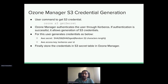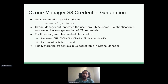When the user wants to get an access key and secret to talk to Ozone S3 APIs, they need to issue a command called 'ozone s3 getsecret.' When this command is run, the client is authenticated by Kerberos. If authentication is successful, it allows generation of S3 credentials. The access key is nothing but the Kerberos user ID, and the secret is a SHA-256 digest of 32 random characters. These S3 secrets are stored in the S3 secret table in OzoneManager. All metadata in OzoneManager is stored in RocksDB, which has multiple column families to store different kinds of entities.